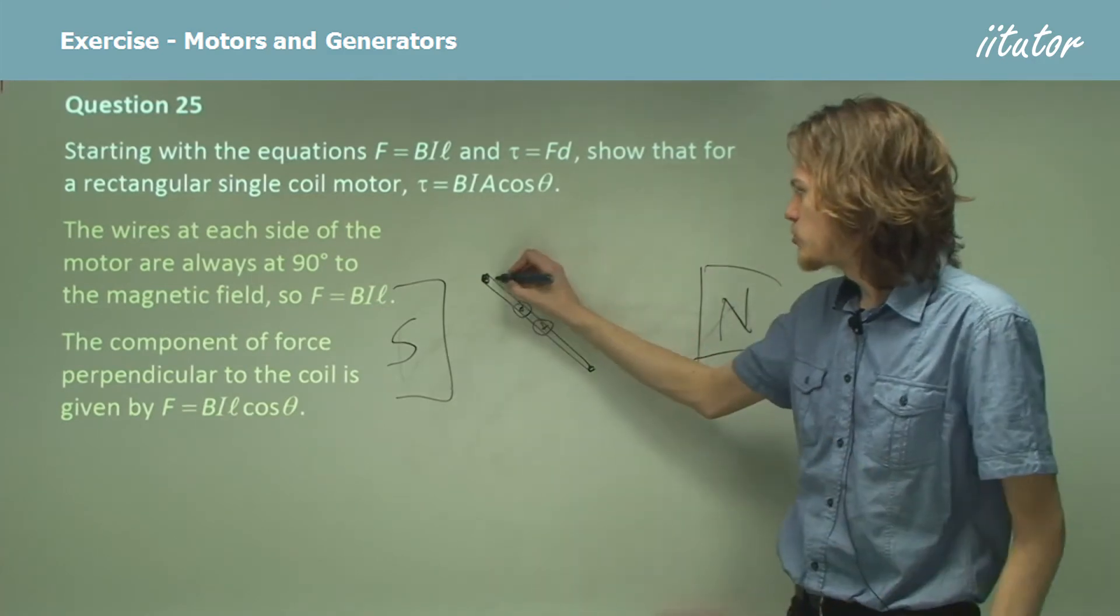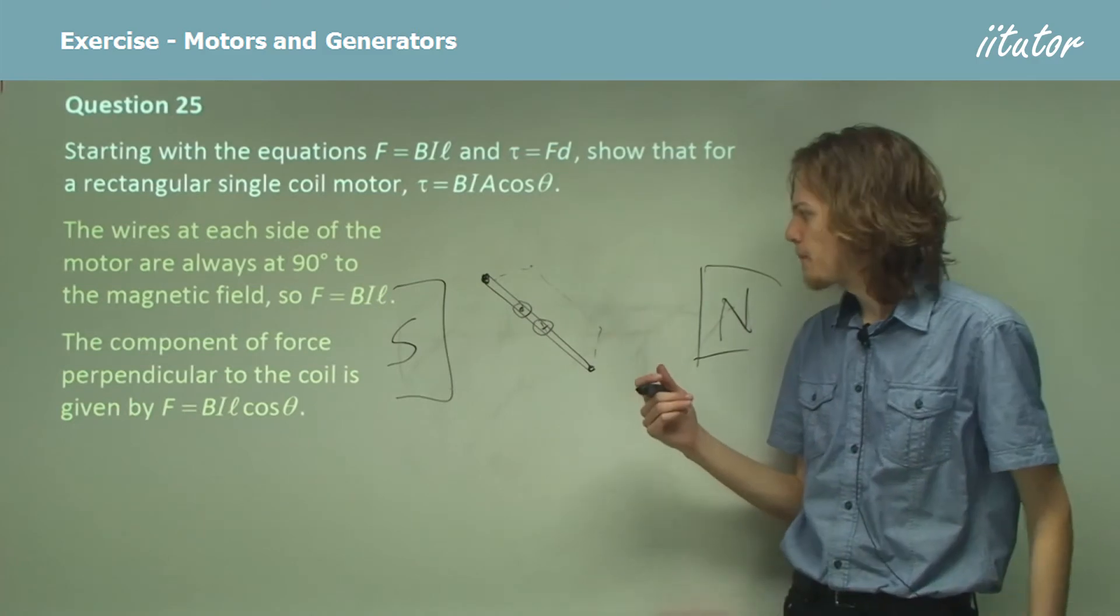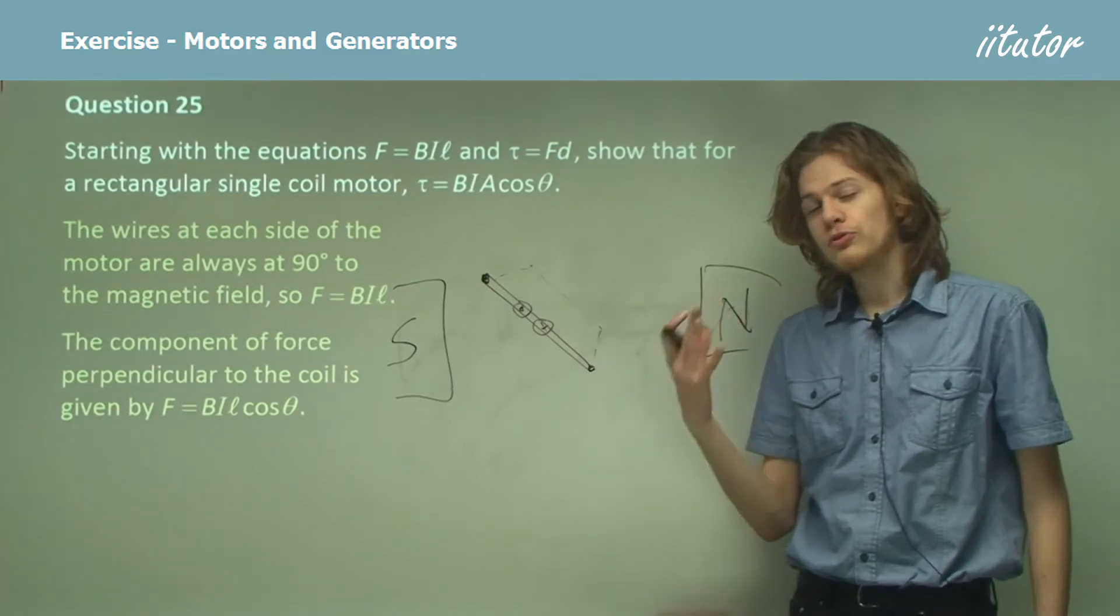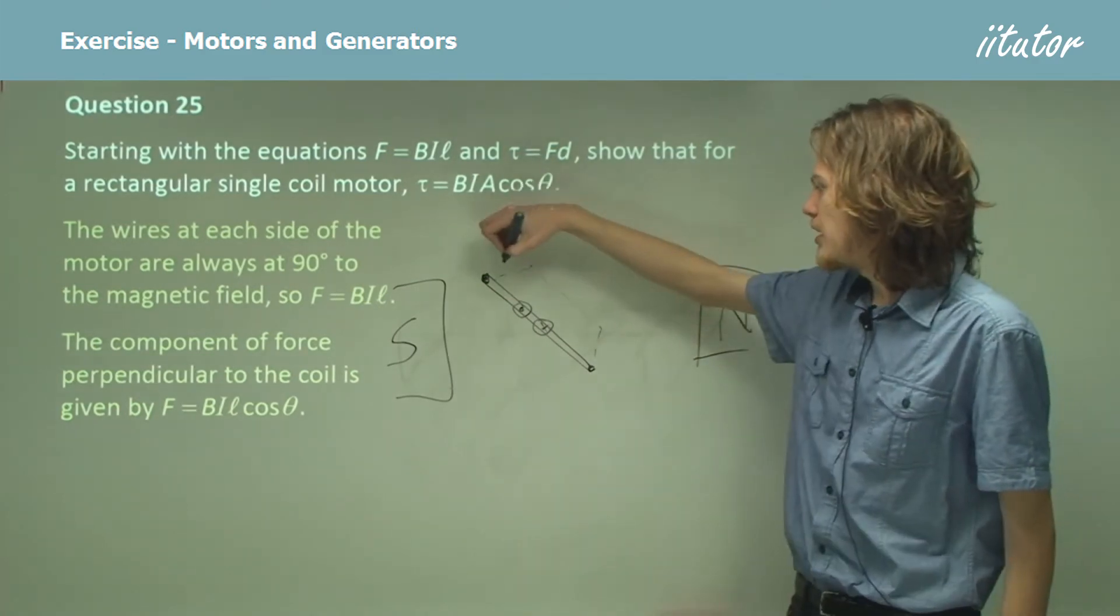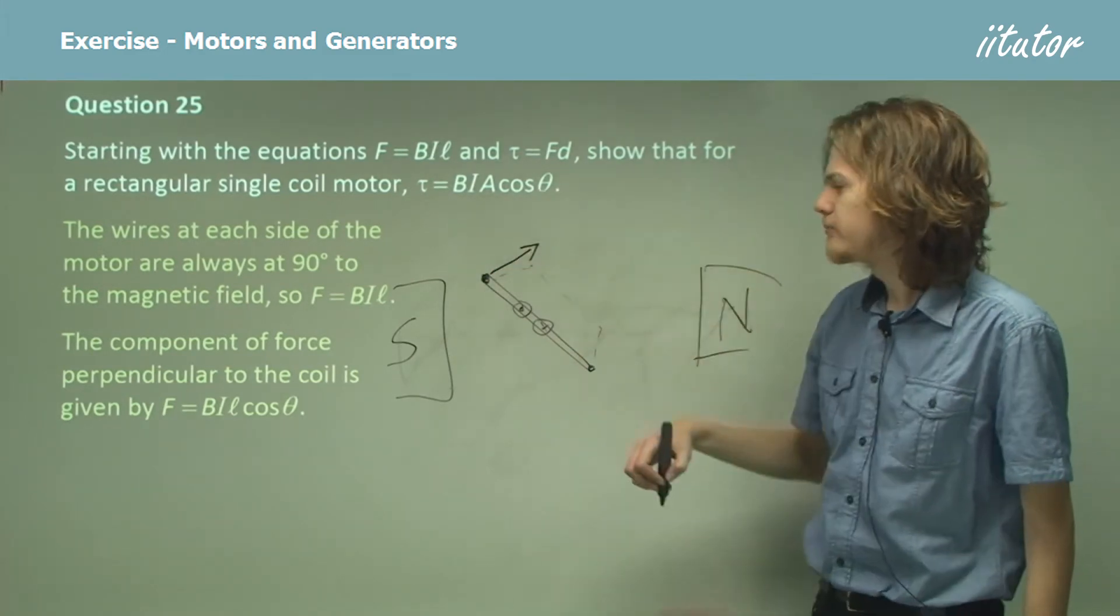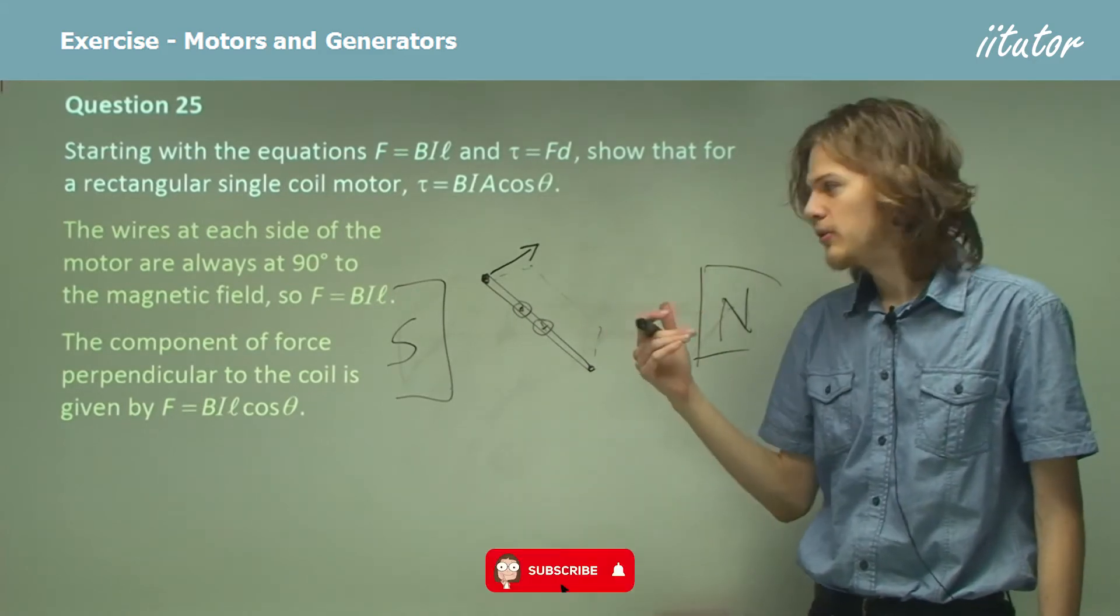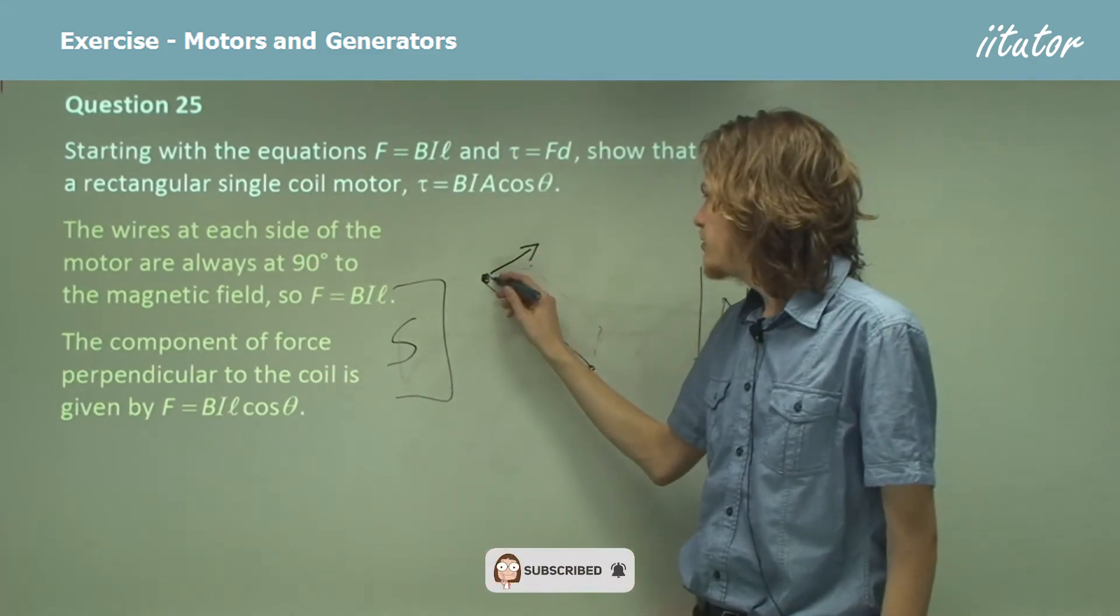So the coil in this case is sort of extending into the background of the board there. Now, to find torque, we need to figure out how much of the force is moving in that direction. But the force produced by the magnetic field is moving in this direction.